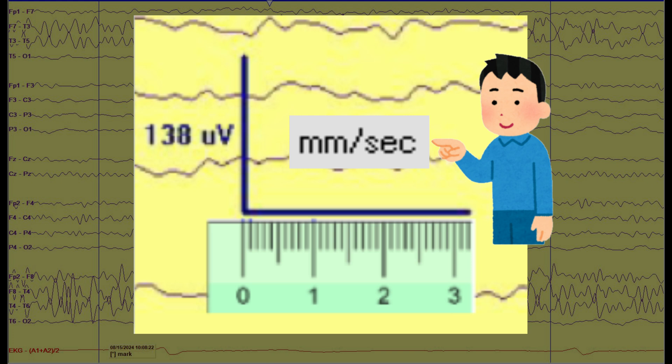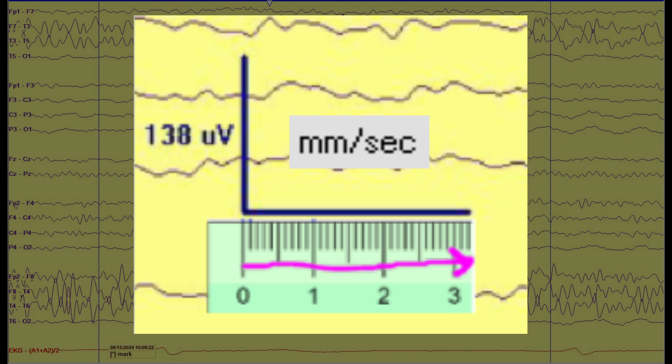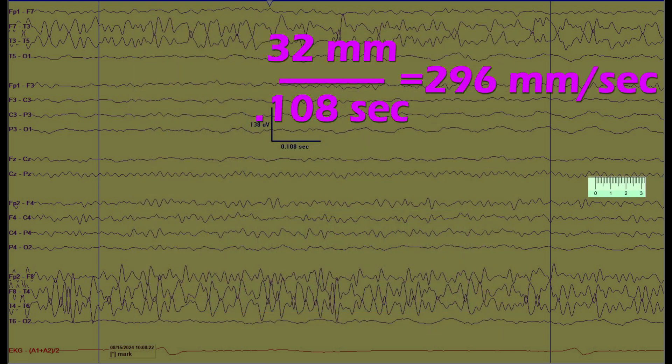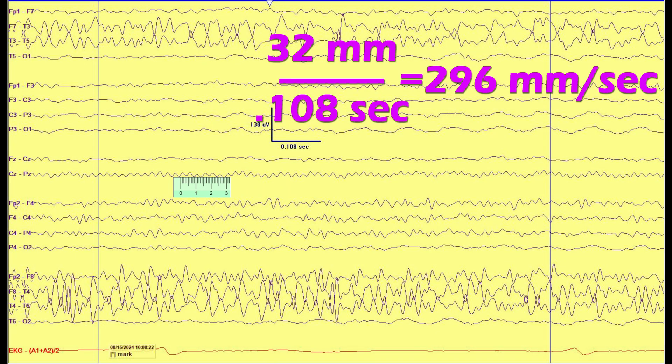They tell you the formula right there for time base and sensitivity. Time base is millimeters divided by seconds. So we need to measure the millimeters of this horizontal line and then divide it by the seconds that are given to us, 0.108 seconds. When I measured this line, I found it to be 32 millimeters. So 32 divided by 0.108 is 296 millimeters. That'd be 296 millimeters per second.